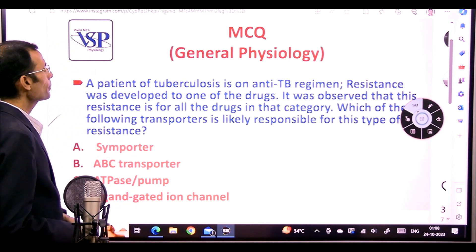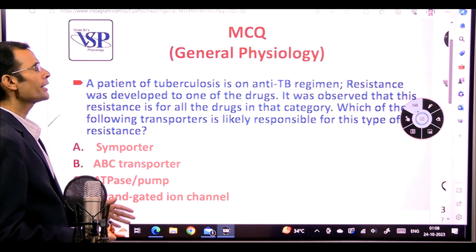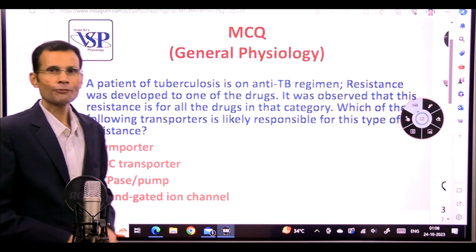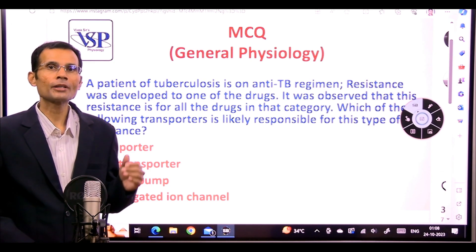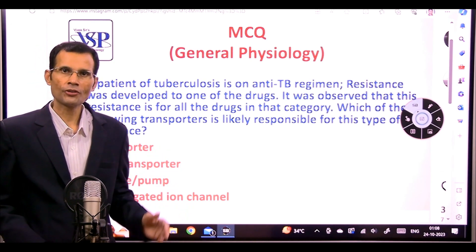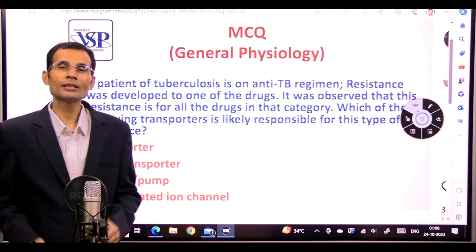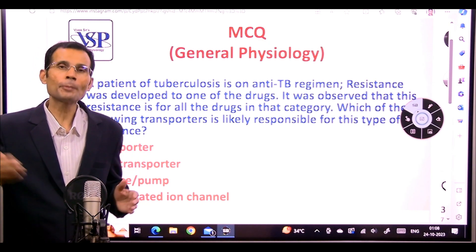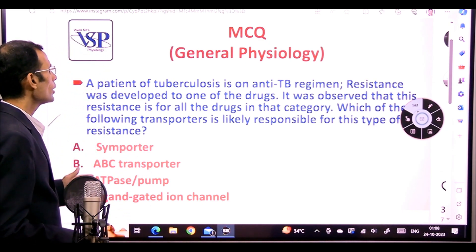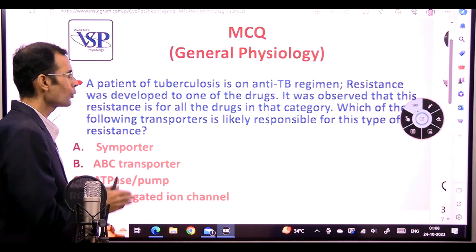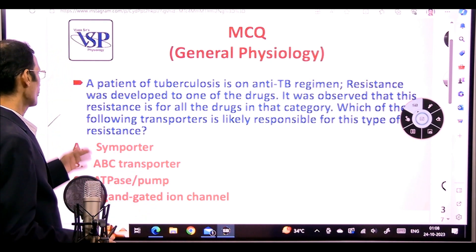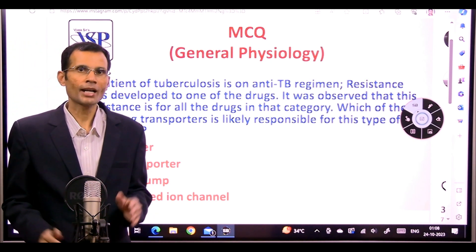Let's see. A patient of tuberculosis is on anti-TB regimen and it was found that this patient has developed resistance to one drug, and later on the patient developed resistance to multiple drugs. Which of the following transporters is likely responsible for this type of resistance? That was the question.